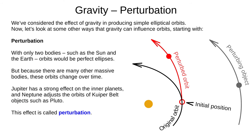Earlier we considered how gravity produces elliptical orbits. Now let's look at a few other ways gravity can influence orbits — perturbation, orbital resonance, and Lagrangian points, starting with perturbation. If there were only two bodies, such as the Sun and Earth, the orbits would be perfect ellipses, but there are many other massive bodies which change the motion of other bodies over time. Jupiter has a strong effect on the inner planets, and Neptune adjusts the orbits of Kuiper belt objects such as Pluto — and we call this effect perturbation.